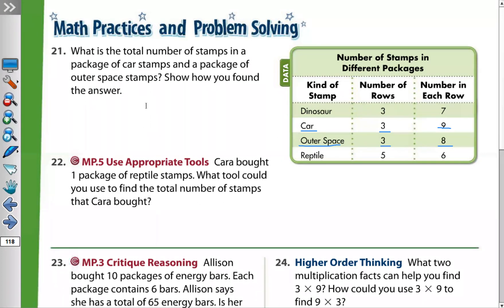For the car stamps, we multiply three times nine. We separate the three into two and one: two times nine equals eighteen, and one times nine equals nine. Then eighteen plus nine equals twenty-seven stamps.